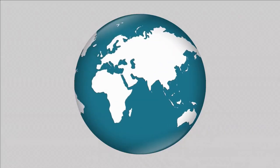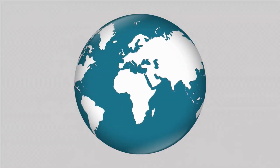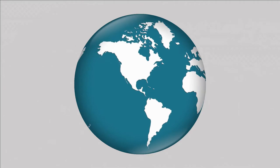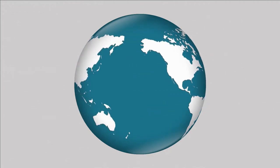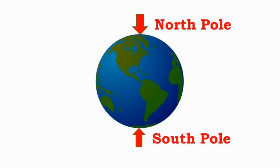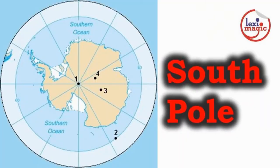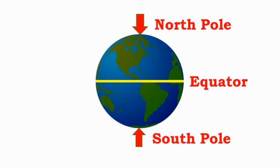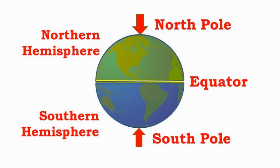The most common representation of the Earth's geography is on a globe, a spherical model of the Earth. The north pole and the south pole define the axis of rotation of the Earth. Between the poles is the great circle that defines the equator. The equator divides the globe into the northern hemisphere and the southern hemisphere.